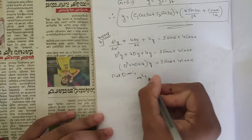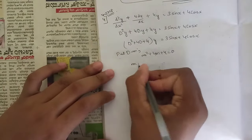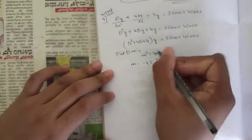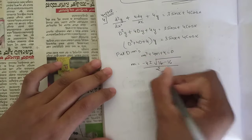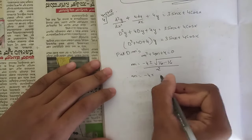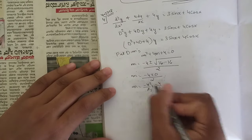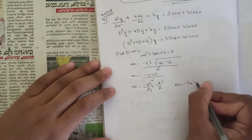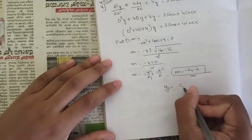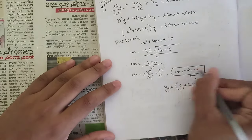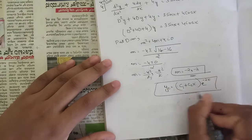Put d = m to get the auxiliary equation: m² + 4m + 4 = 0. Using the quadratic formula with b = 4: minus 4 ± √(16 - 16) / 2, giving m = -4/2 = -2. The roots are -2, -2 — repeated roots. So the complementary function is (c1 + c2·x)·e^(-2x).